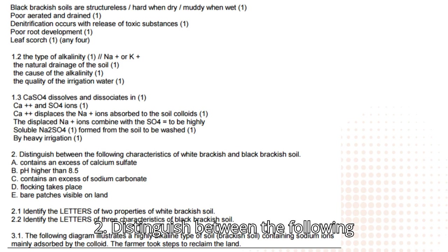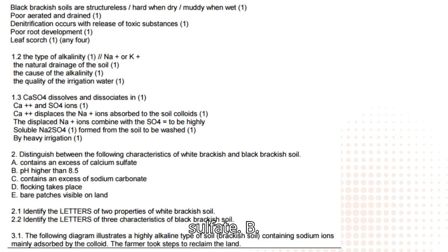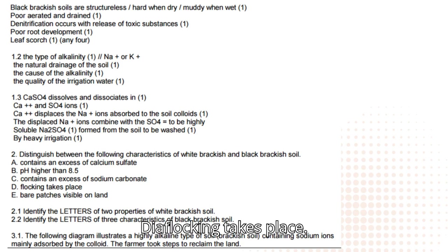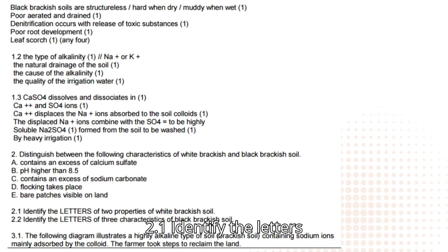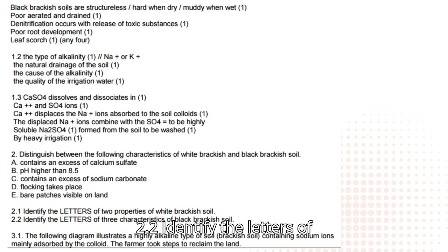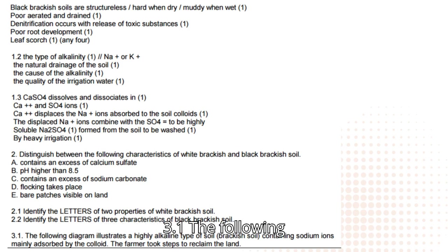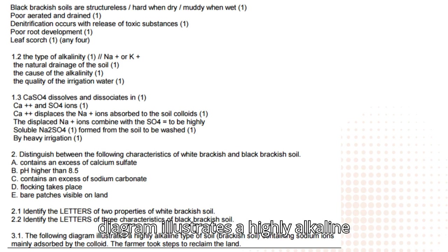2.5 Distinguish between the following characteristics of white brackish and black brackish soil: A — contains an excess of calcium sulfate; B — pH higher than 8.5; C — contains an excess of sodium carbonate; D — flocking takes place; E — bare patches visible on land. 2.5 Identify the letters of two properties of white brackish soil, and identify the letters of three characteristics of black brackish soil. 3.1 The following diagram illustrates a highly alkaline type of soil — brackish soil — containing sodium ions.